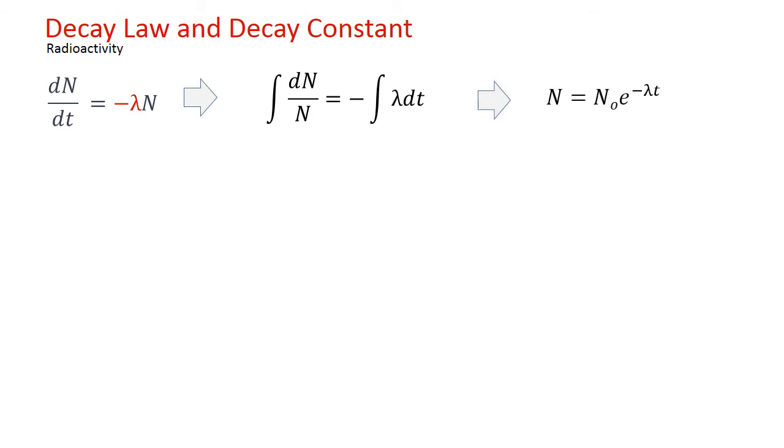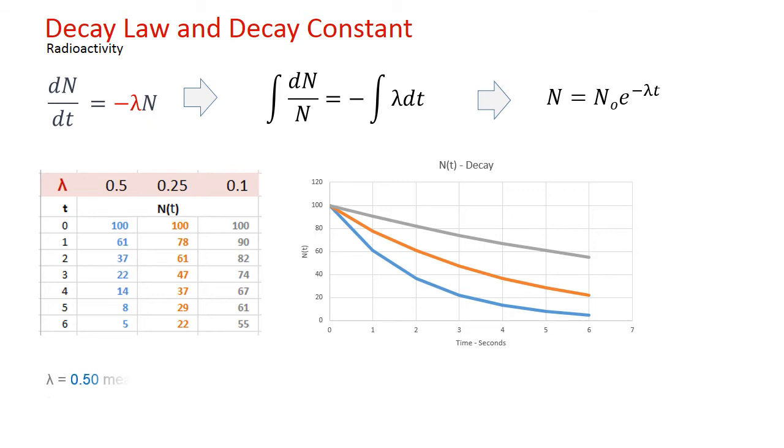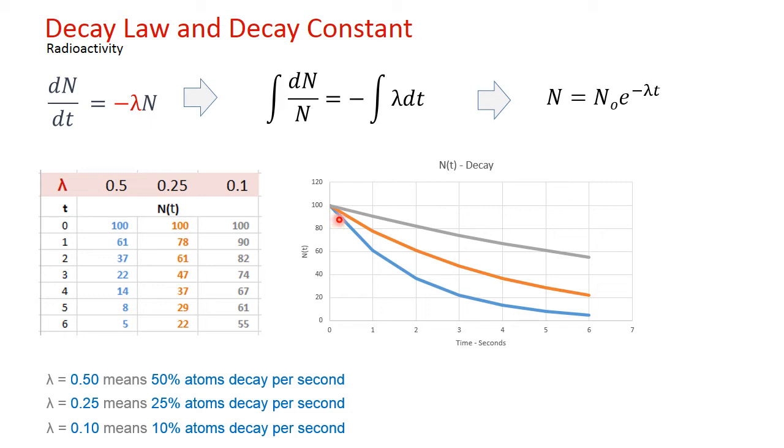This is the equation that we are familiar with. Here N is the amount remaining after time t and starting with N zero. Let us take three hypothetical materials with different lambda and see their behavior. We find that the material with the highest lambda, or the highest decay factor, decays the fastest, obviously.